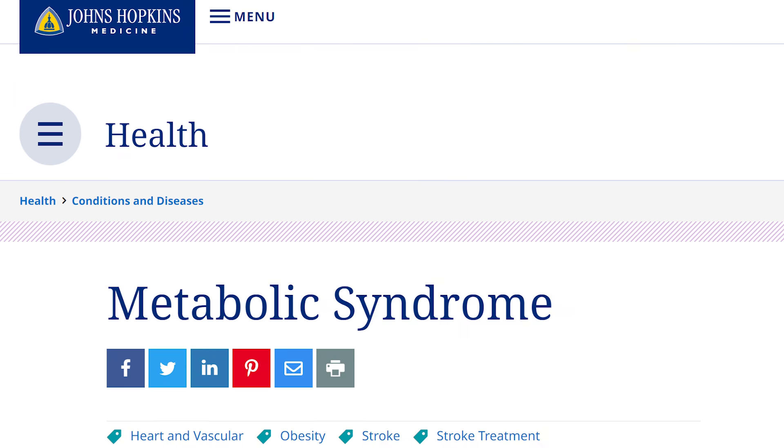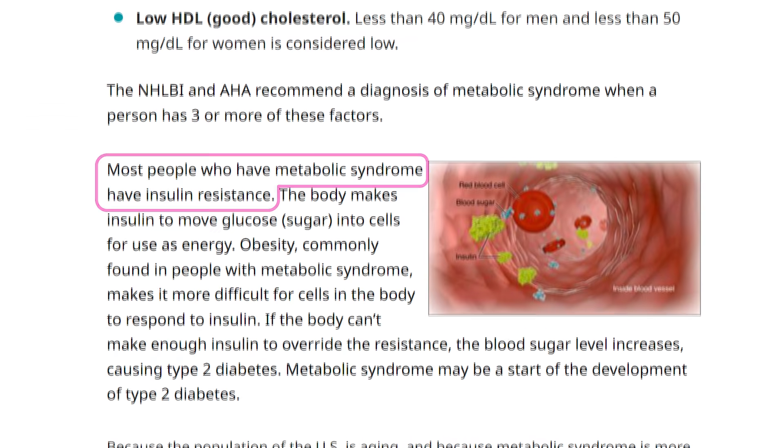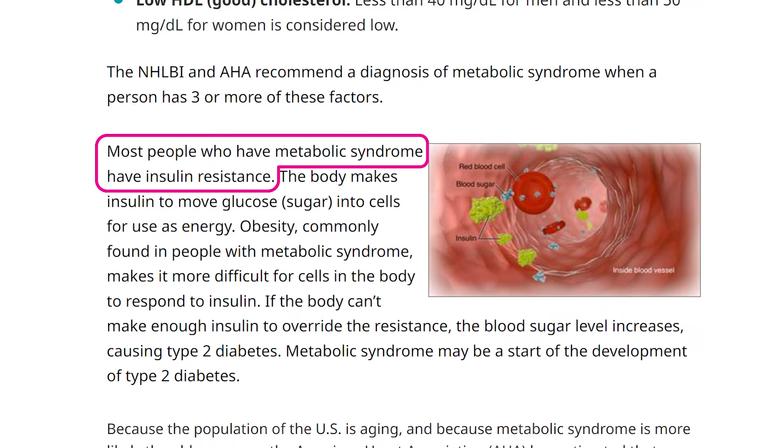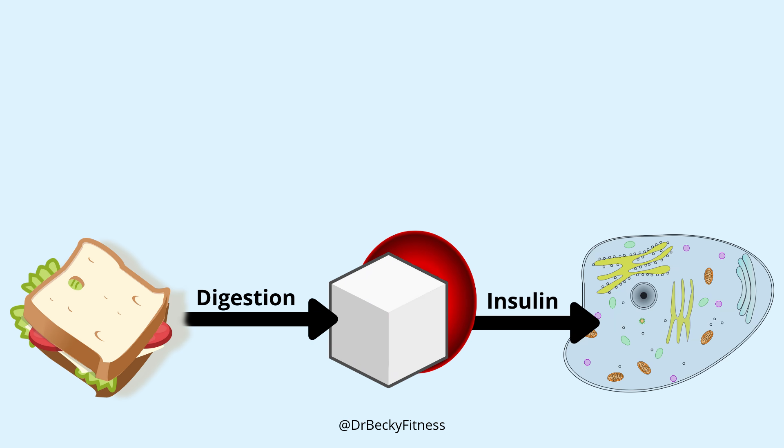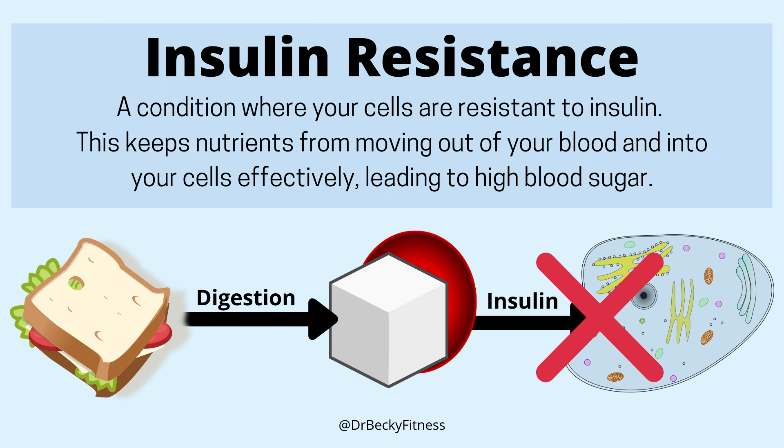According to Johns Hopkins Medicine, most people who have metabolic syndrome have insulin resistance. Insulin is a hormone made by your pancreas to move glucose or sugar out of your blood and into your cells for use as energy. Factors common to those with metabolic syndrome, such as obesity and a diet high in refined carbohydrates, make it more difficult for cells in the body to respond to insulin. In other words, the cells resist insulin's efforts, creating the condition called insulin resistance.